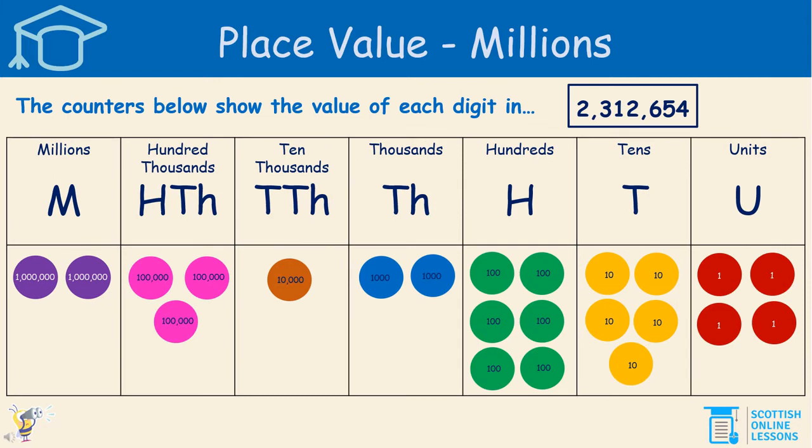Now let's take a look at how we can use place value counters to create a visual representation of a number. The place value counters allow us to see clearly the value of each digit in the number. The counters below show the value of each digit in 2,312,654.